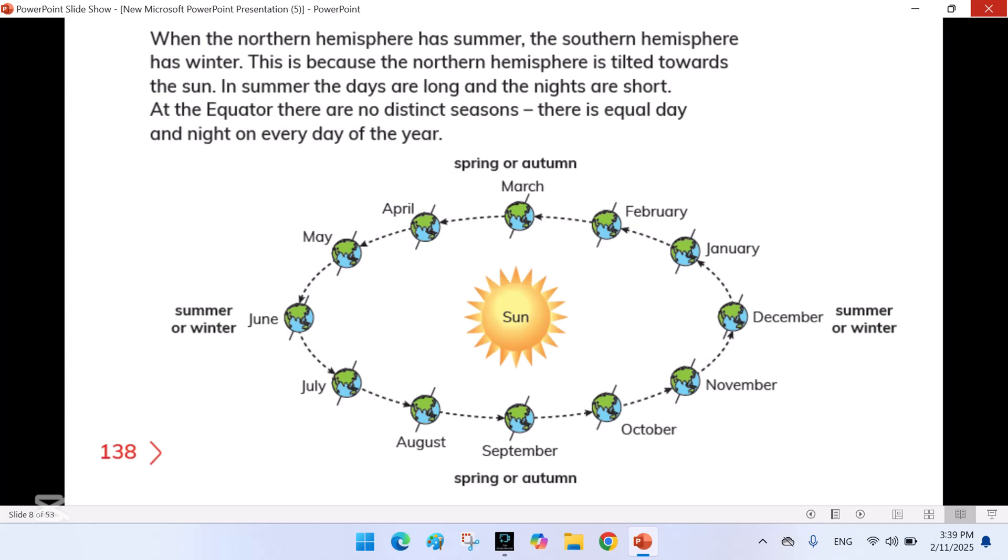When the northern hemisphere has a summer, the southern hemisphere has winter. This is because the northern hemisphere is tilted towards the sun. In summer, the days are long and the nights are short.